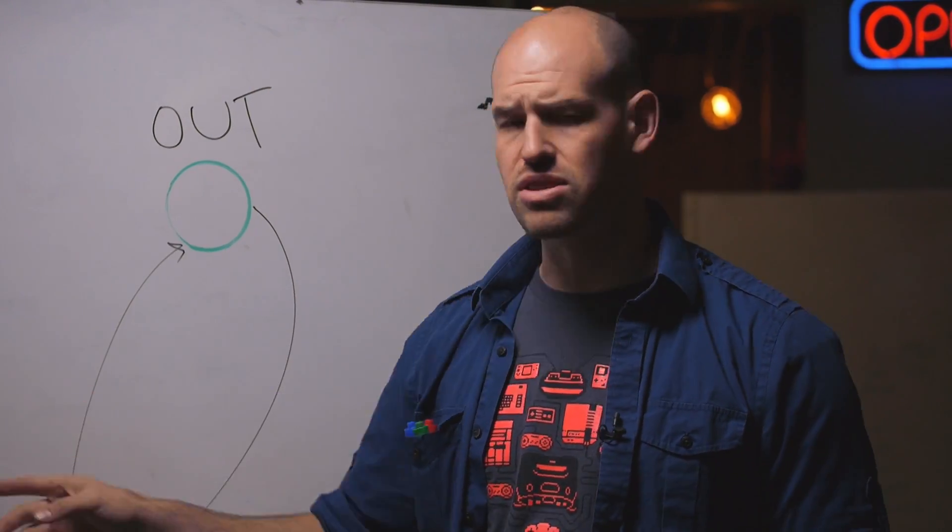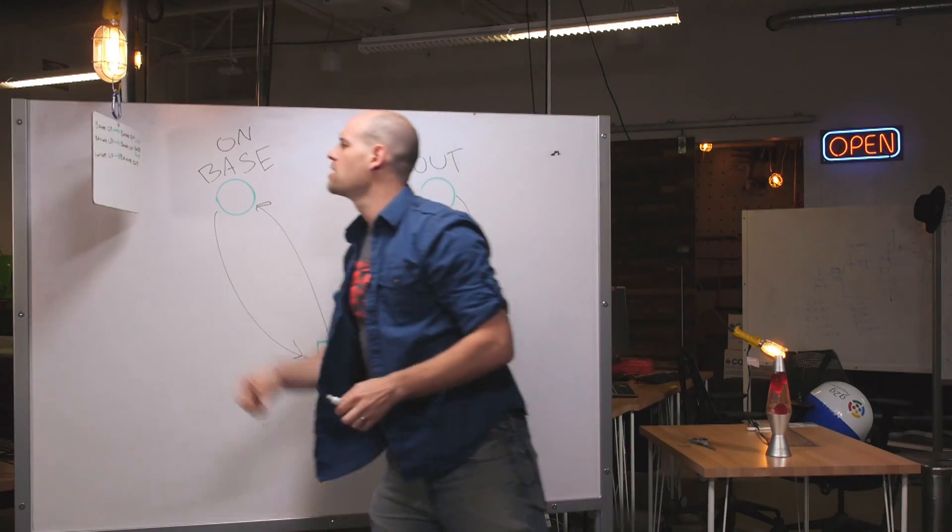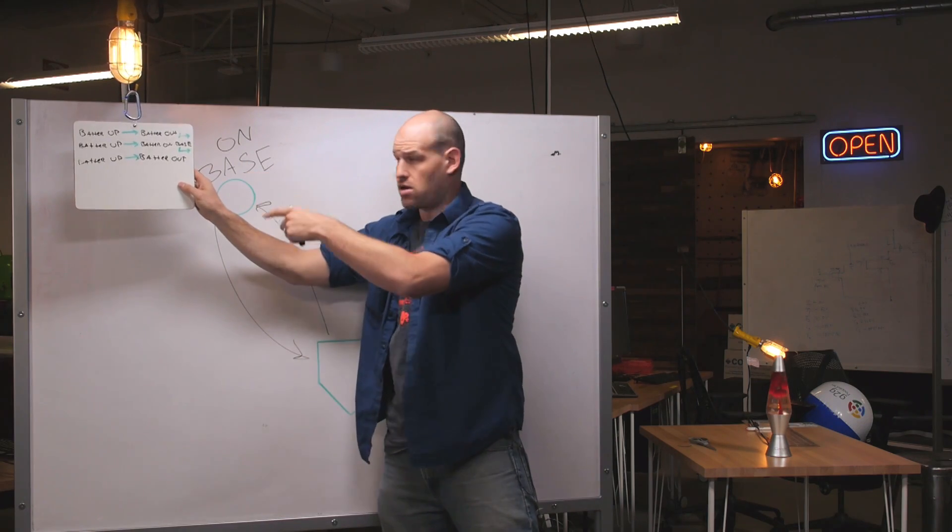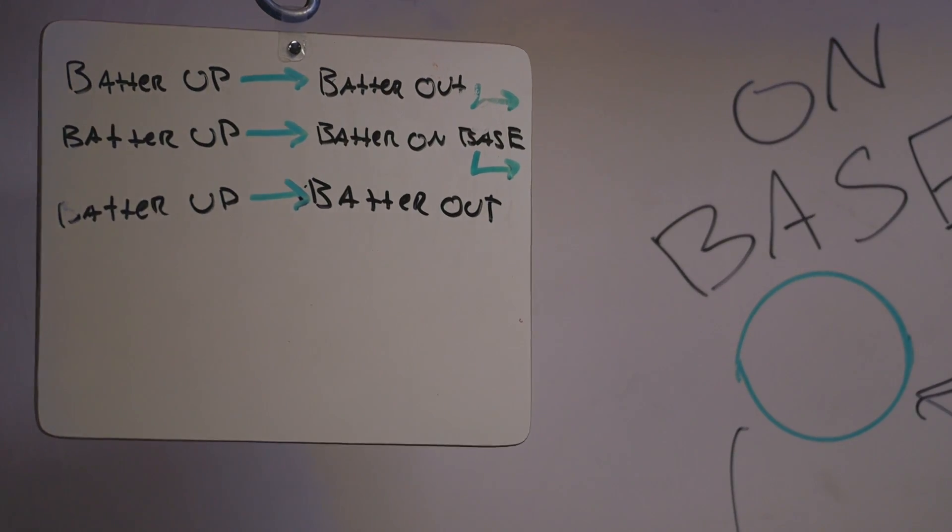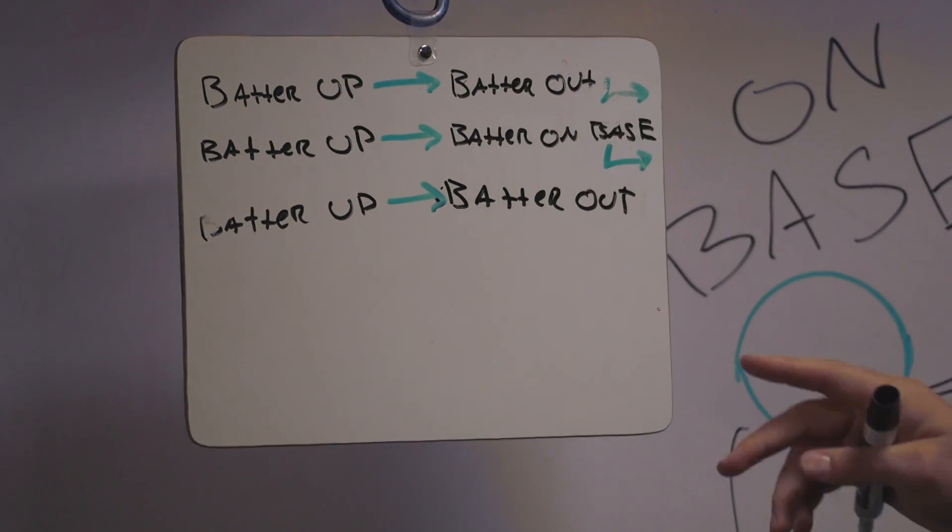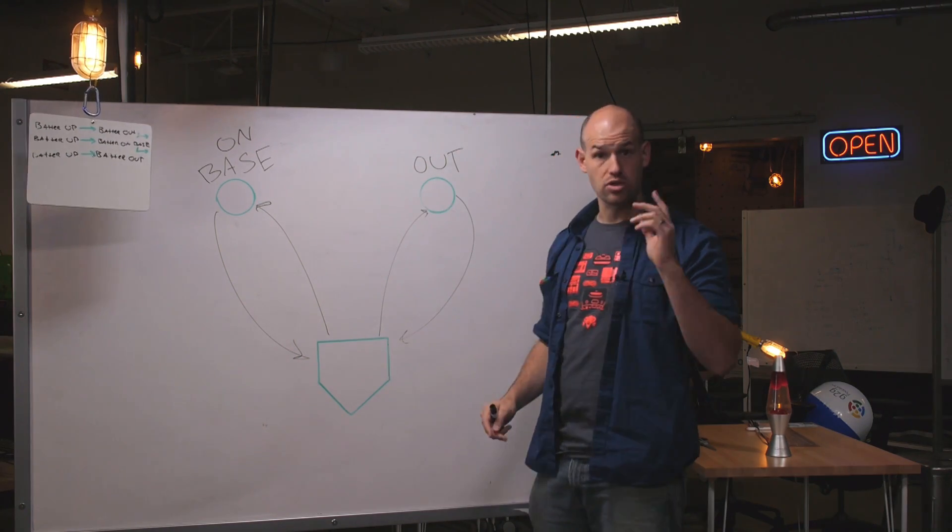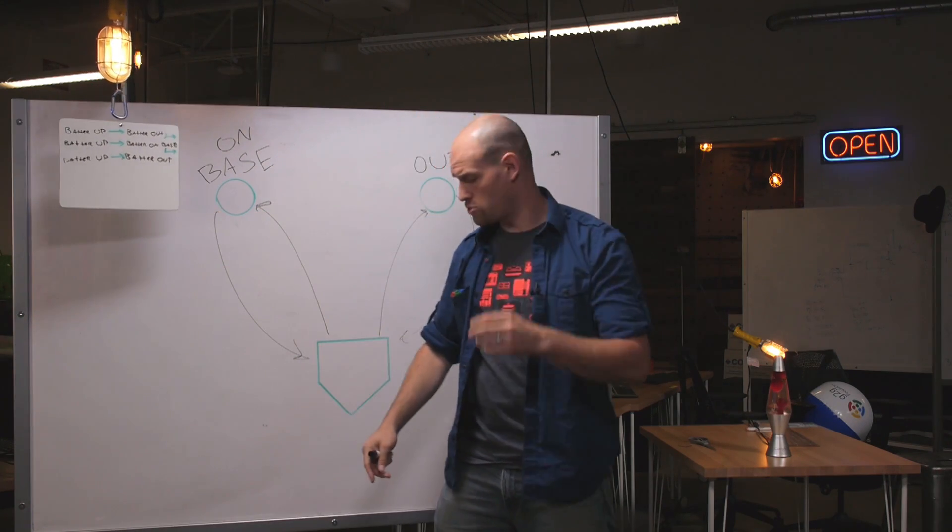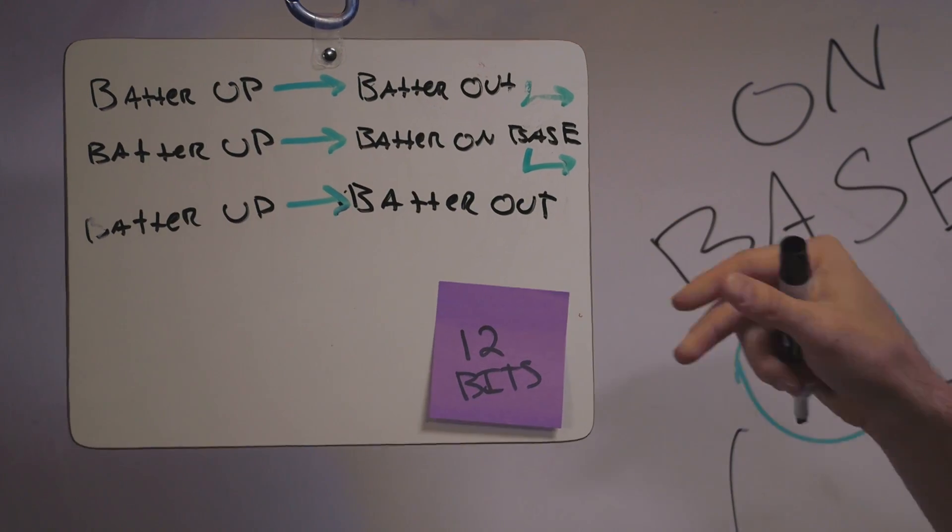Now, what the interesting part about this is that once you've moved to either the on base state or the out state, you actually return back, and another batter comes up to bat. The cool thing about this is that it's pretty self-explanatory, right? Only three states and a couple transitions between them. Now, what if we actually wanted to transmit some movement through this graph to another individual? Say, for example, we have a batter up, batter out, up, and then they get on base, get up again, and then another batter out.